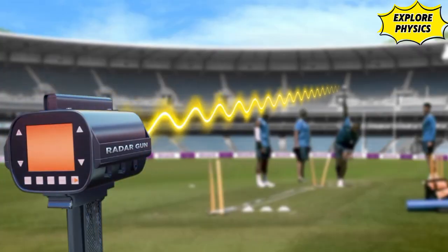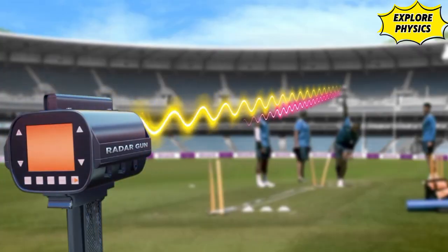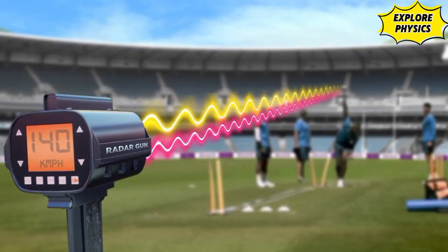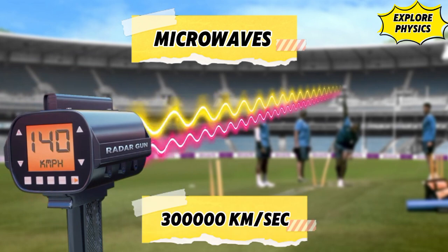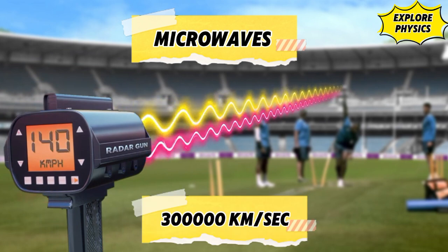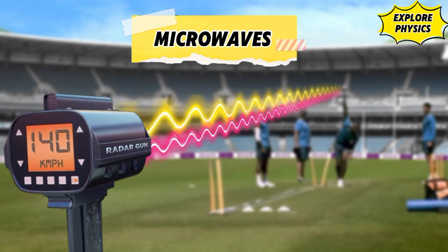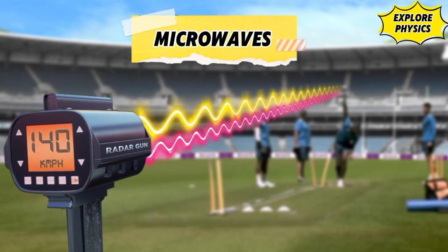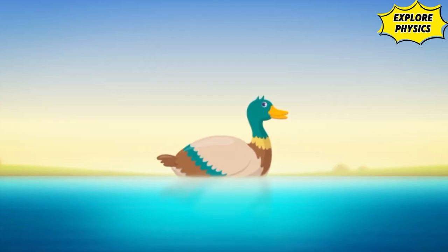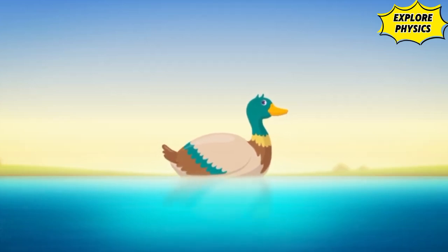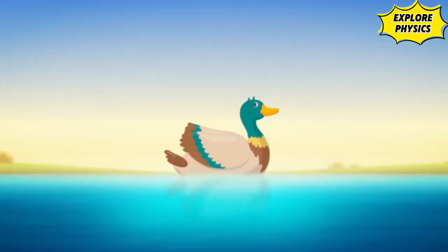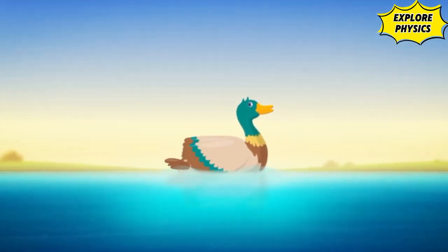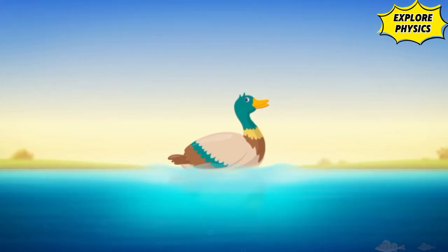The radar gun can emit and receive invisible waves called microwaves, moving with the speed of light. To understand the behavior of these waves, let's observe a duck on a water pond. When a duck flips its wings, it disrupts the medium of the water particles, creating waves that travel along the water.